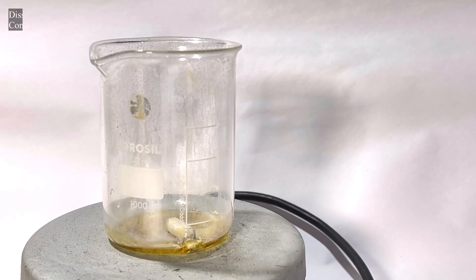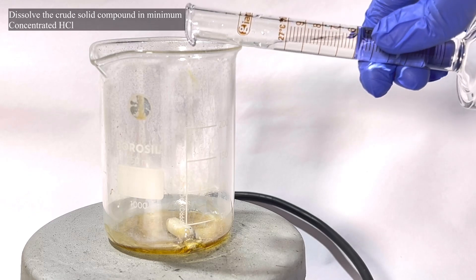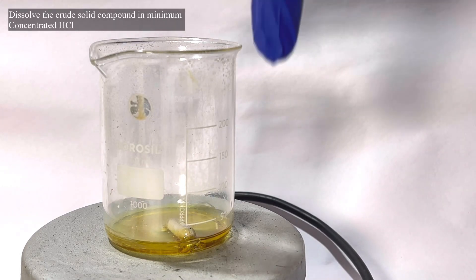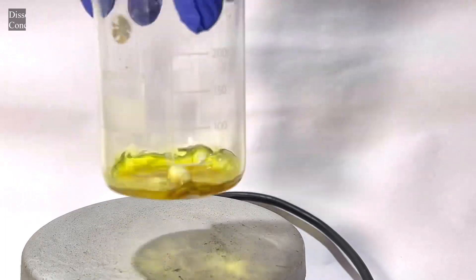The solid tellurium tetrachloride was dissolved in a minimum amount of concentrated 35% hydrochloric acid. I used around 15 to 20 milliliters.